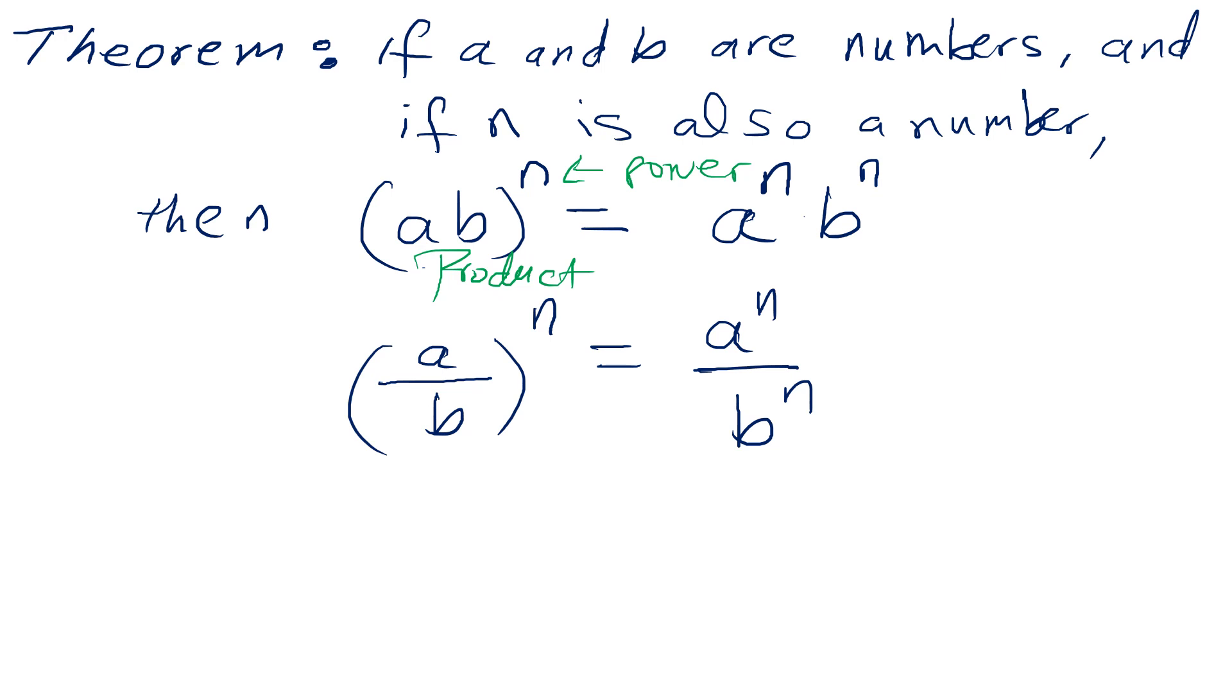Before I give some examples, it's worth mentioning the confusion that happens with binomial square. Example: (ab)^2. Based on this theorem, it's a^2 times b^2.